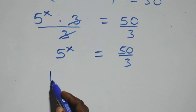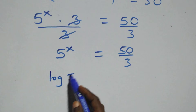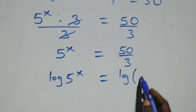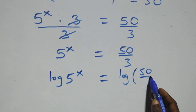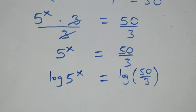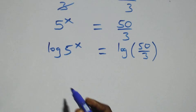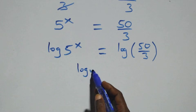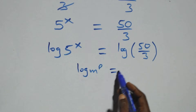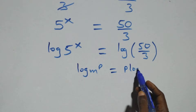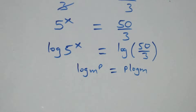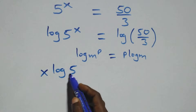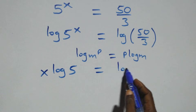Then we take the log on both sides. We have log of 5 raised to power x equals log of 50 over 3. We apply the power rule of logarithms: log of n raised to power p is the same as p times log n. So we have x times log 5 equals log of 50 over 3.